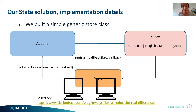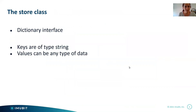The observing view calls a function called register_callback with the key and a callback. The store has a dictionary interface where keys are of type string and values can have any type of data.